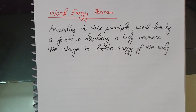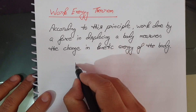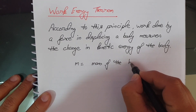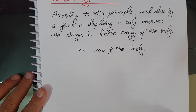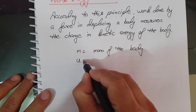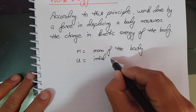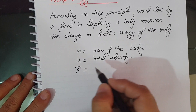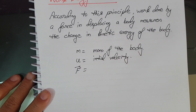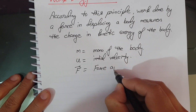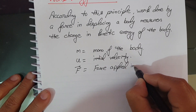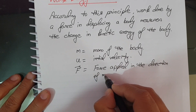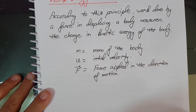To prove the work-energy principle, consider m as the mass of the body, u as the initial velocity of the body — note that u is not zero, this is the initial velocity — and F is the force applied on the body in the direction of motion.